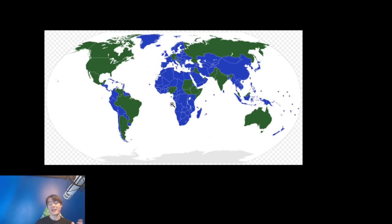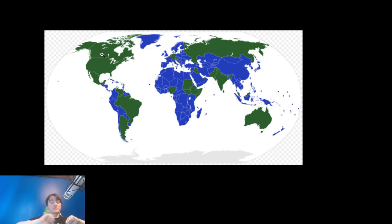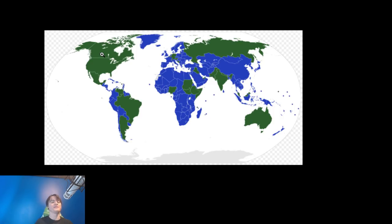Here is a map of all of the federations in the world, which are green, versus all the unitary states. The simple explanation is that green countries are made up of states where the power comes from those individual states or republics, which give power to the central government. Whereas blue countries give powers to local governments from the central government — so the central government has all the power in blue.